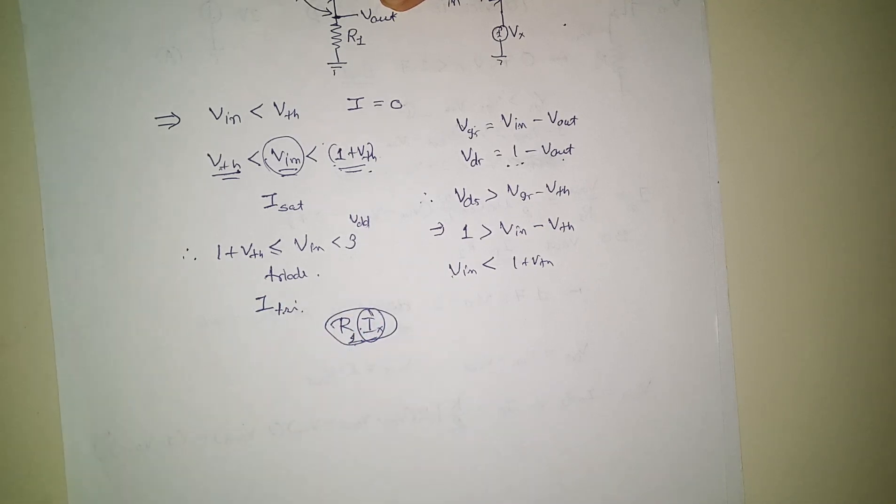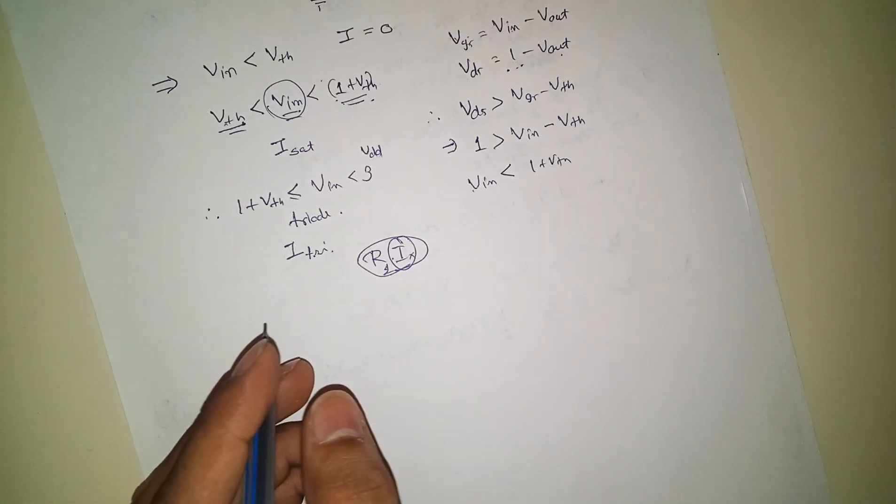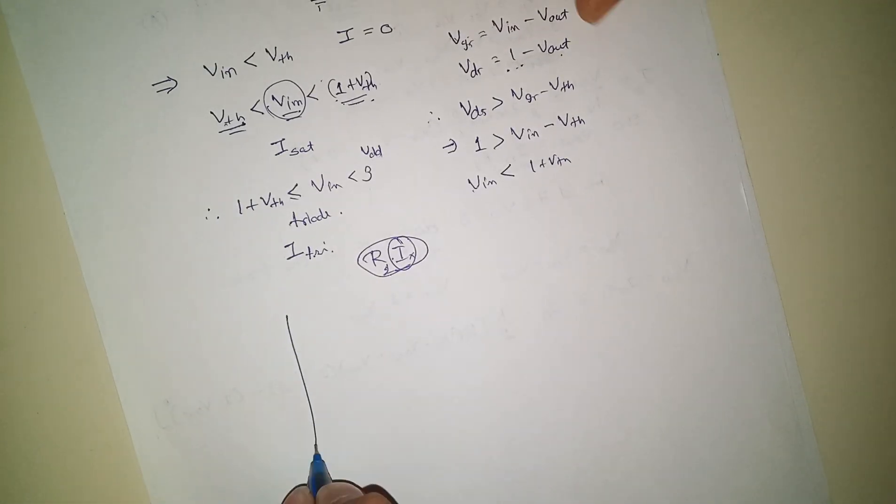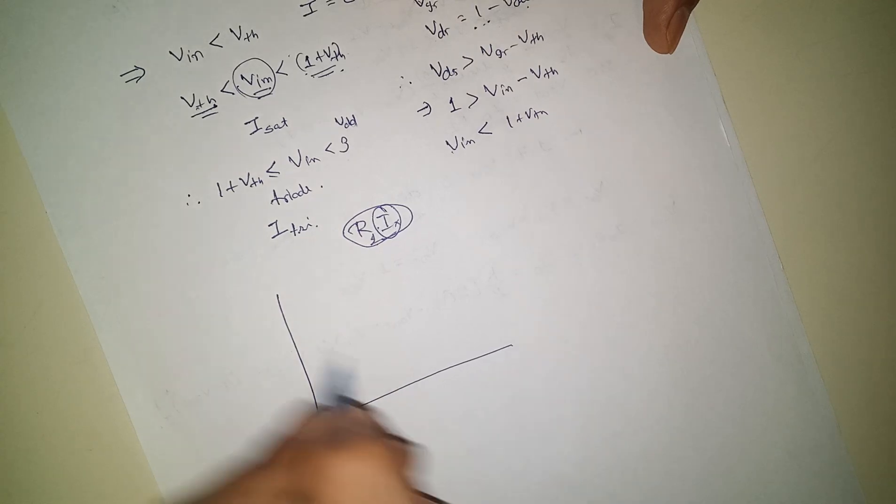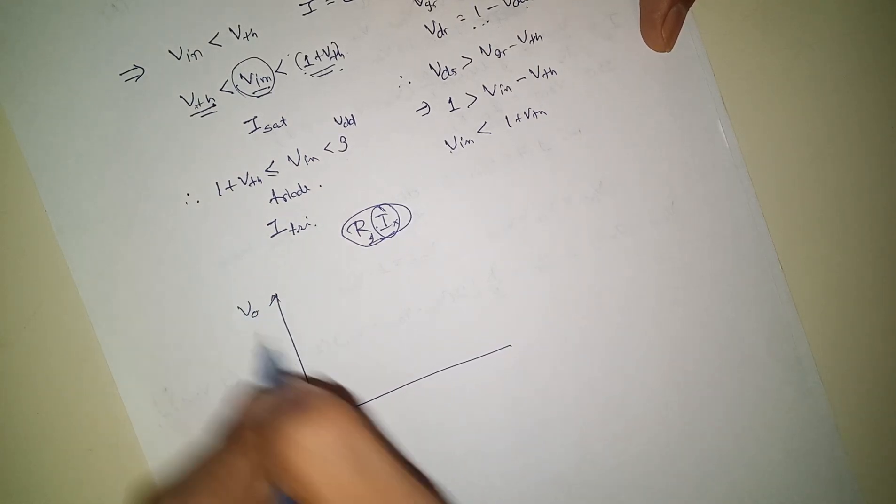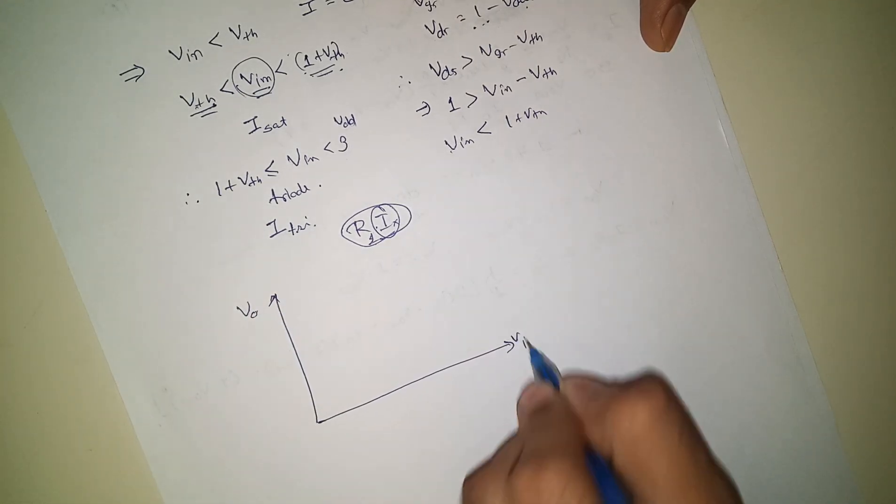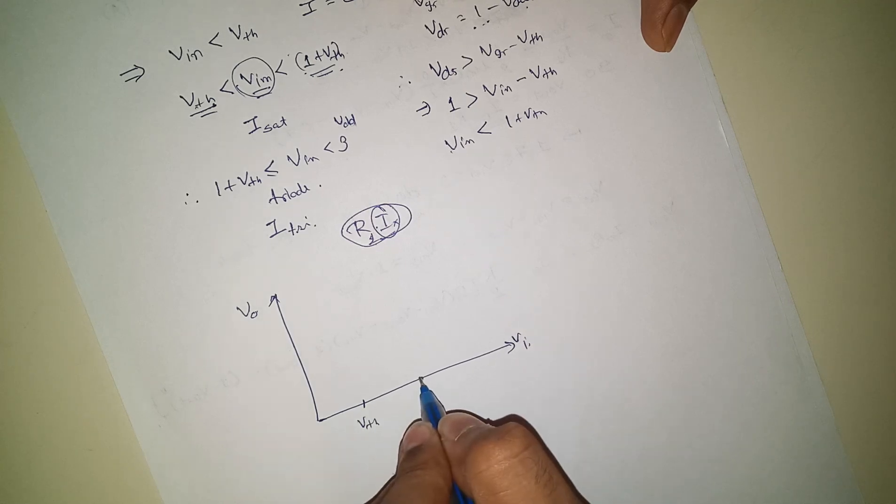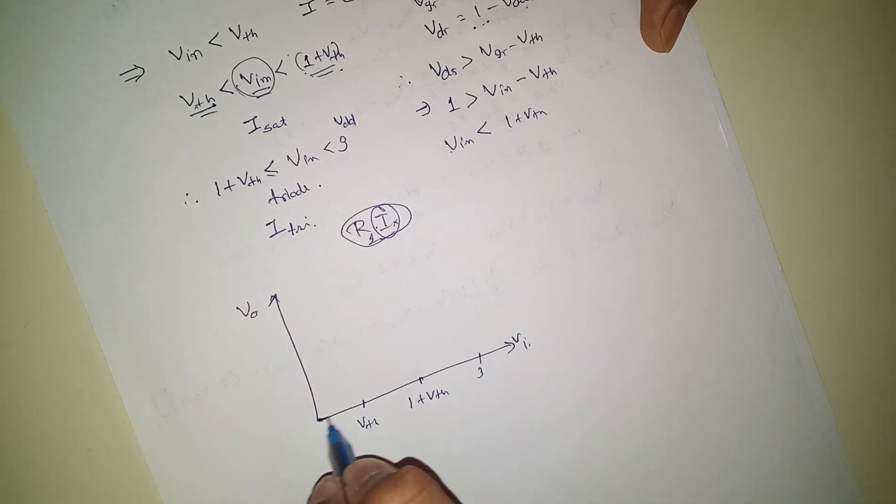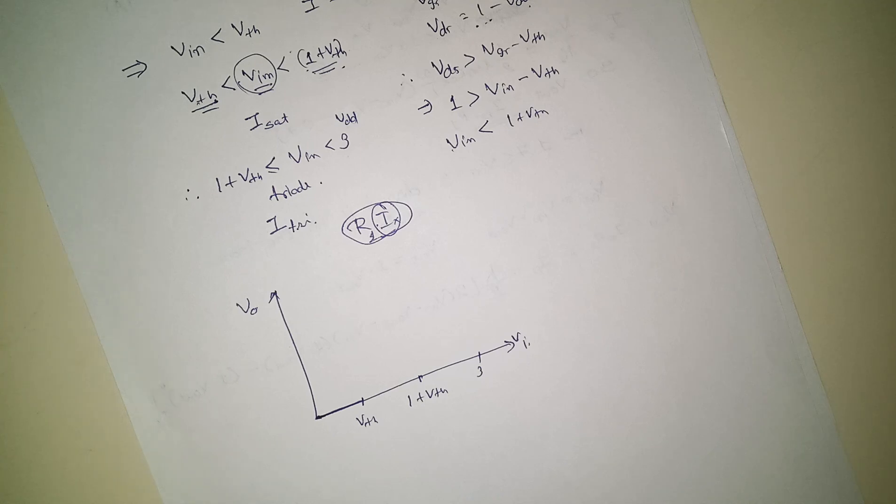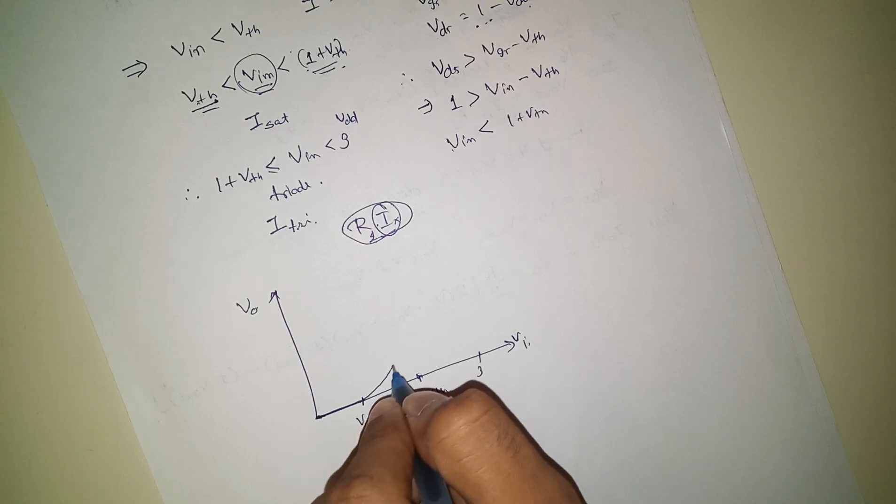If you will see the V_out versus V_in, it will be like this. First point is V_th, this point is 1 plus V_th, and up to 3 voltage. This is zero because current itself is zero, so the drop is zero.